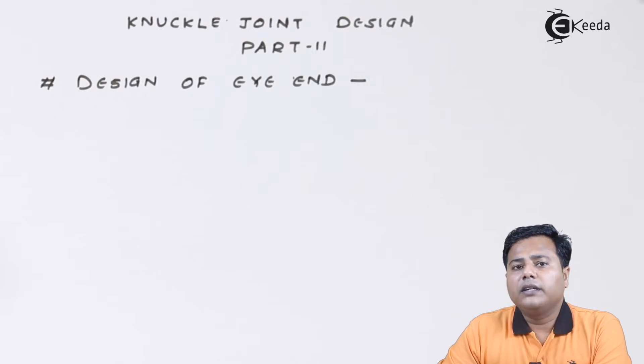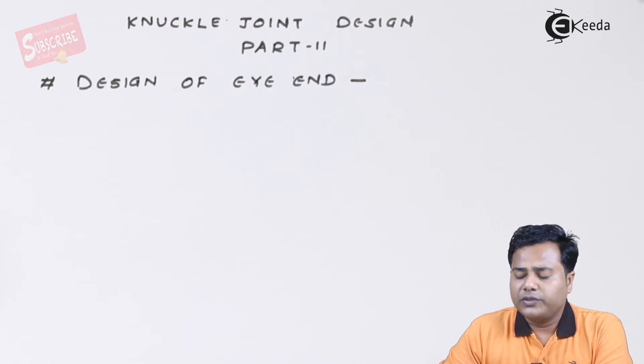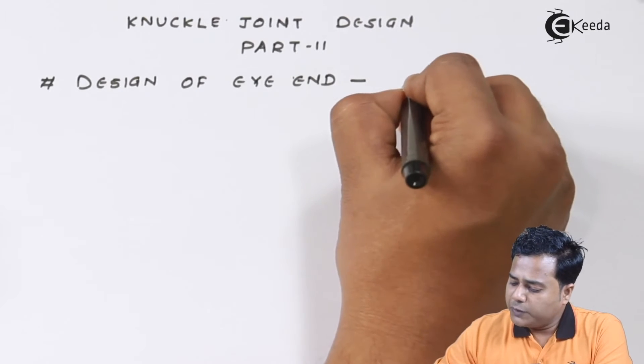Students, we have already taken down the formulae which are very important in case of knuckle joint design. We are going to concentrate on the formulae which take care of the knuckle joint eye section. Basically we are going to design this particular part.